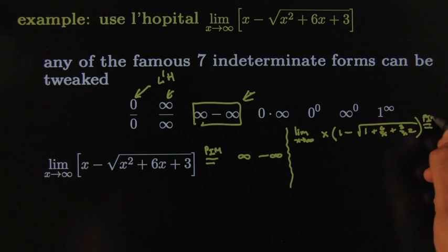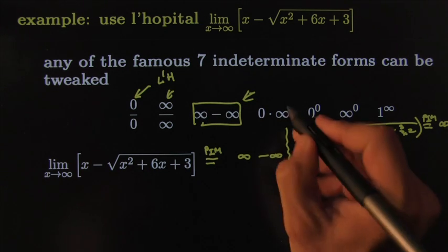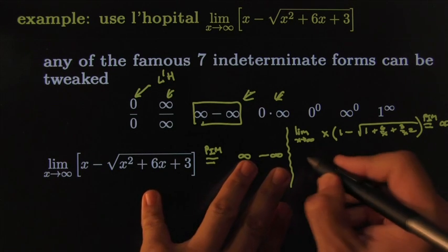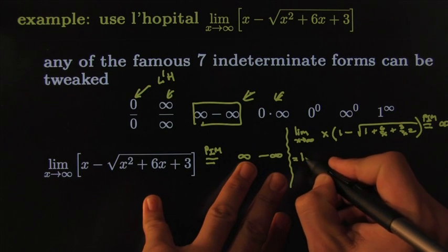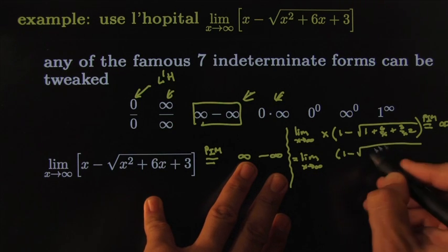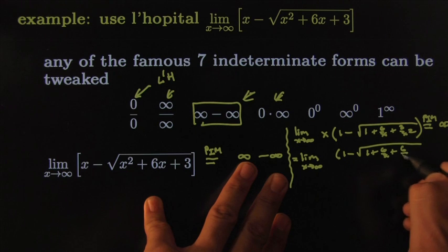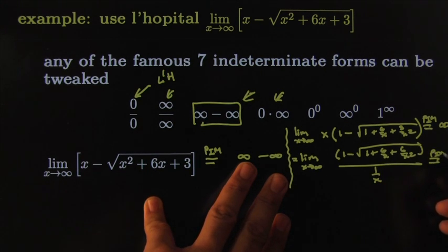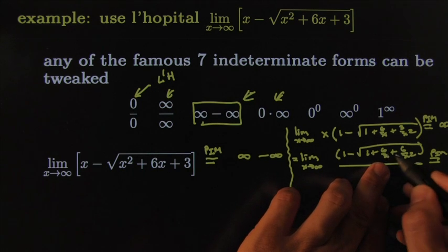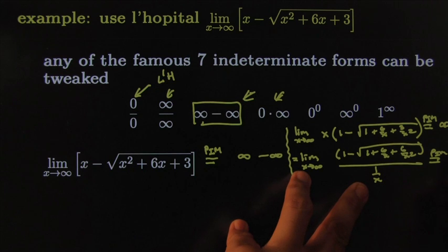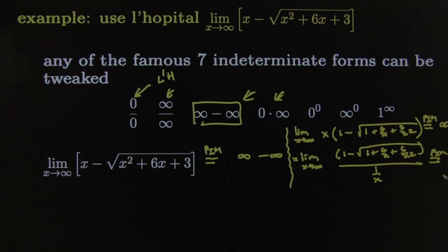If I try the plug-in method now, I still get infinity times 0 — I've just turned one indeterminate form into another. But I can rewrite it again: the limit as x goes to infinity of [1 minus the square root of 1 + 6/x + 3/x²] all over 1/x. Now the plug-in method gives zero on the numerator and zero on the bottom.